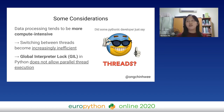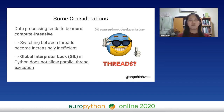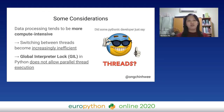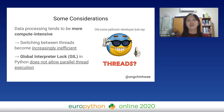Before we implement the code, there are some considerations. Because data processing tends to be more compute-intensive, switching between threads becomes increasingly inefficient. On top of that, there is also the Global Interpreter Lock (GIL) that does not allow parallel thread execution.